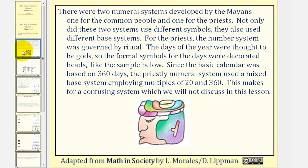There were two numerical systems developed by the Mayans: one for the common people and one for the priests. Not only did the two systems use different symbols, they also used different base systems.